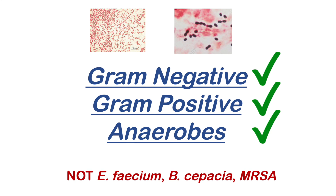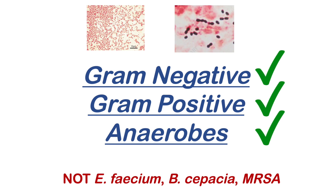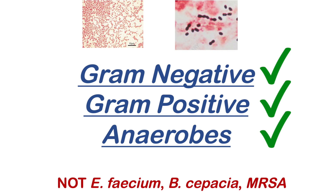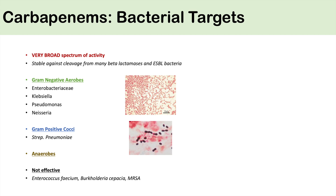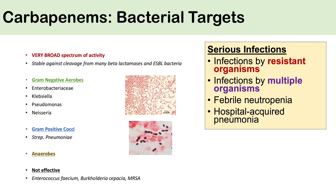Carbapenems are good for gram-negative coverage and good for covering Pseudomonas, but not good for covering Enterococcus faecium, Burkholderia cepacia, and specifically MRSA. So if there's a suspicion of MRSA, don't use carbapenems. They have such a broad spectrum of activity that they're only going to be used in serious infections — generally infections by resistant organisms or infections by multiple organisms. They're also used for individuals with febrile neutropenia — usually cancer patients receiving chemotherapy with a very low neutrophil count who come in with a fever. Some hospital-acquired pneumonia may also be covered with a carbapenem.